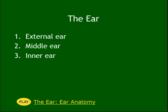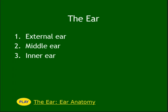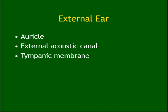The ear has three parts: external, middle, and inner. The boundaries are important. What separates the external from the middle is the tympanic membrane — also called the eardrum. Between the middle and inner ear is the oval window, which is an opening.